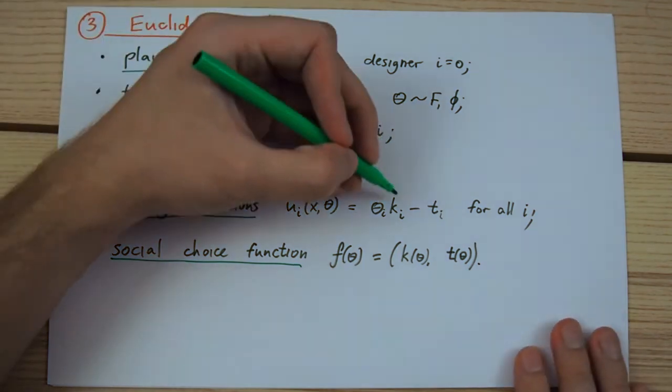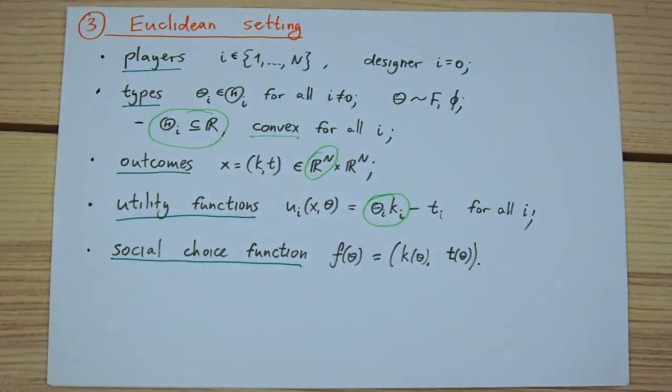Finally, we assume that every player's utility before transfers is given by the product of these two numbers, namely player's type and the allocation they get.